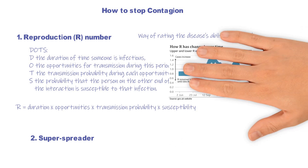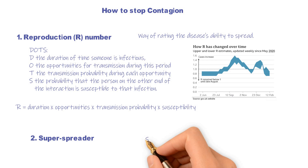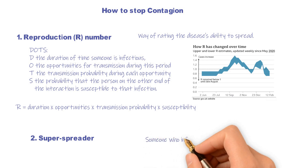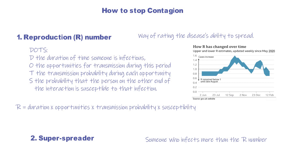Now we know that the R number is not a fixed number. Instead, it changes as our behavior changes or as immunity develops. A super spreader is someone who infects more people than the R number, and super spreaders are highly infectious. Locating the super spreader is one crucial part of controlling the contagion. The idea of R number and super spreaders explains why wearing a mask, social distancing, and even lockdown can help us fight COVID-19.